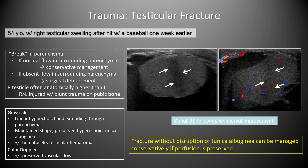A 58-year-old hit by a baseball one week earlier showed a linear hypoechoic fracture line extending across the testicular parenchyma with preservation of the tunica albuginea, a small hematocele, and preserved color Doppler flow in the surrounding parenchyma. A fracture is a break in the parenchyma; if flow is normal in surrounding tissue, conservative management may be employed. The right testis is anatomically higher and is more commonly injured with blunt trauma.